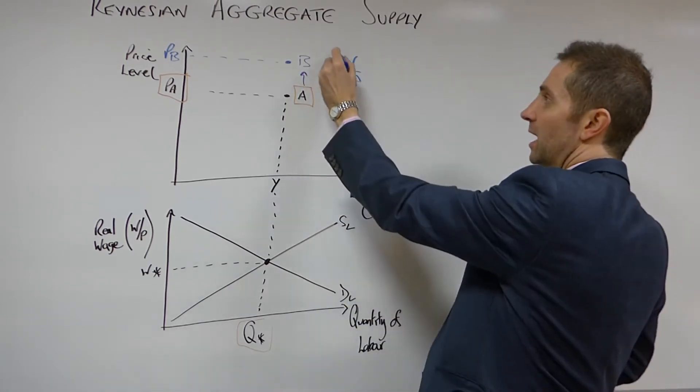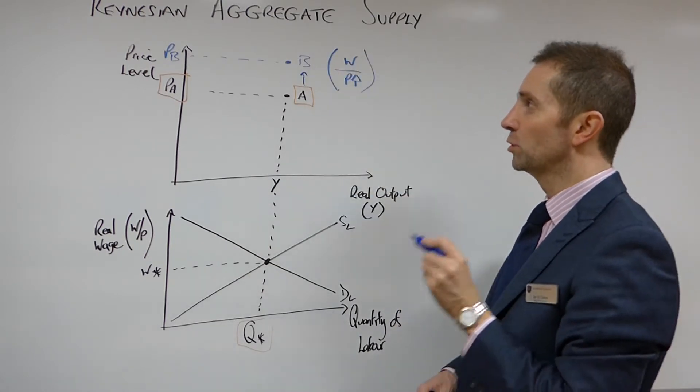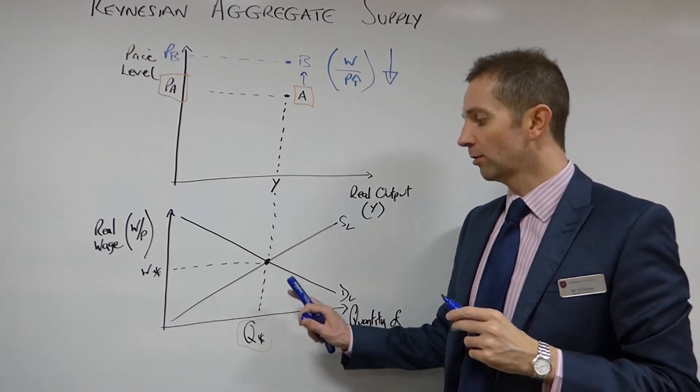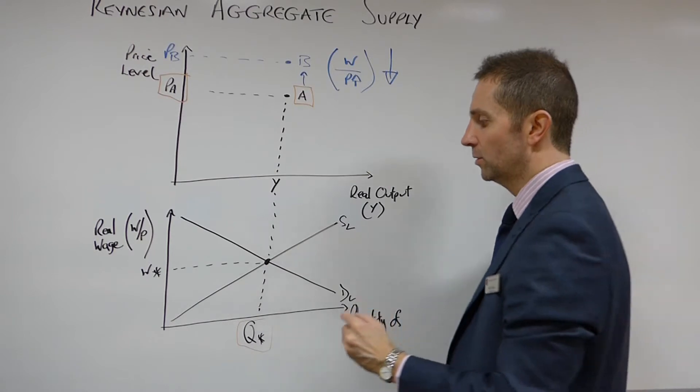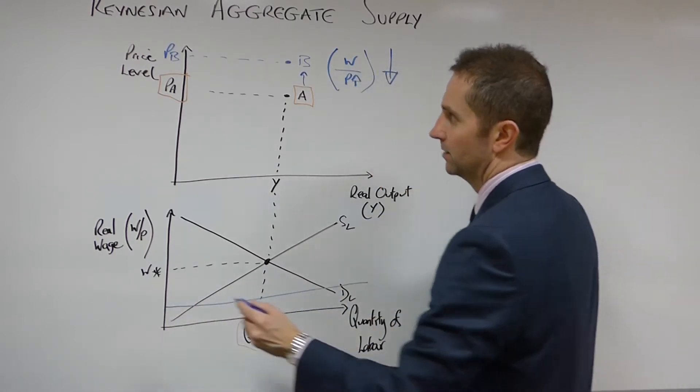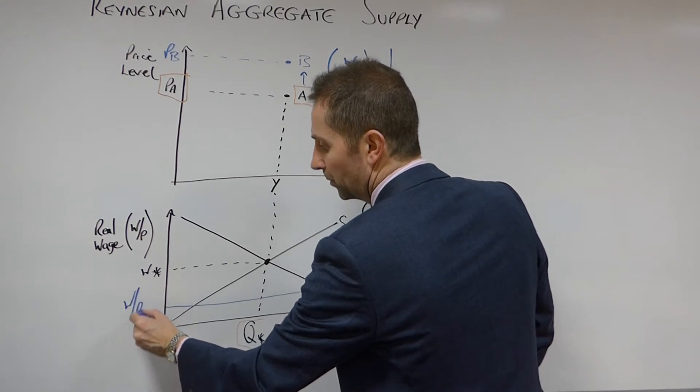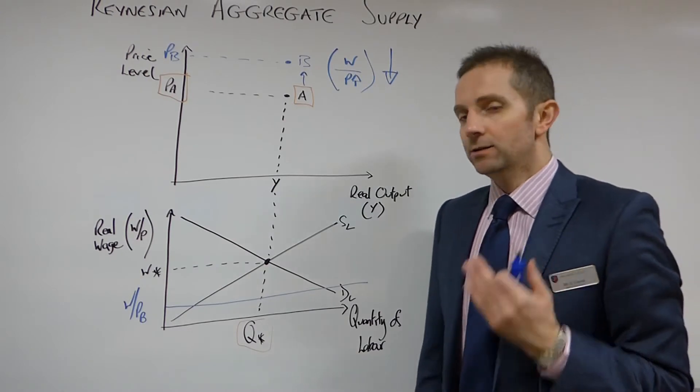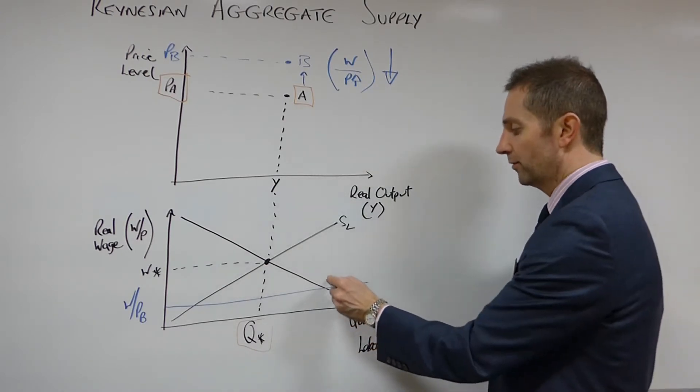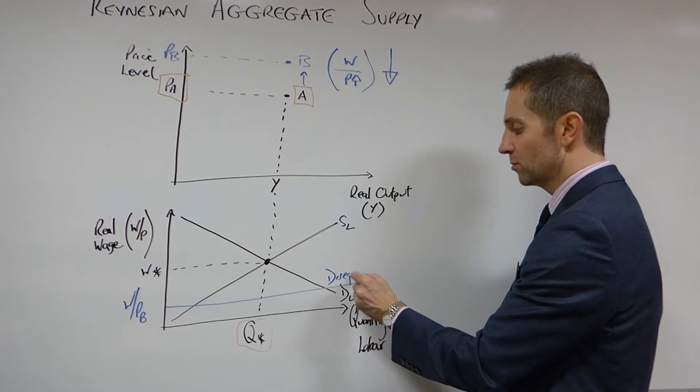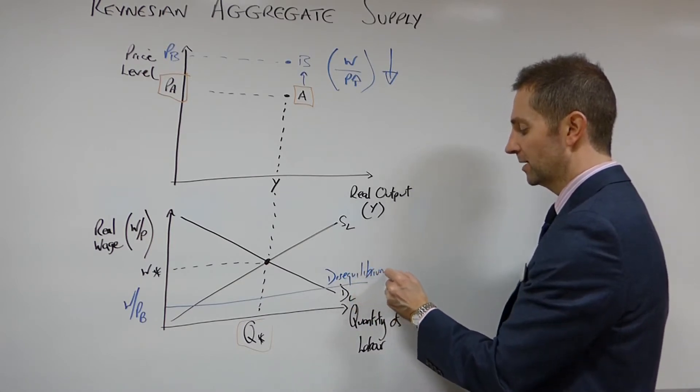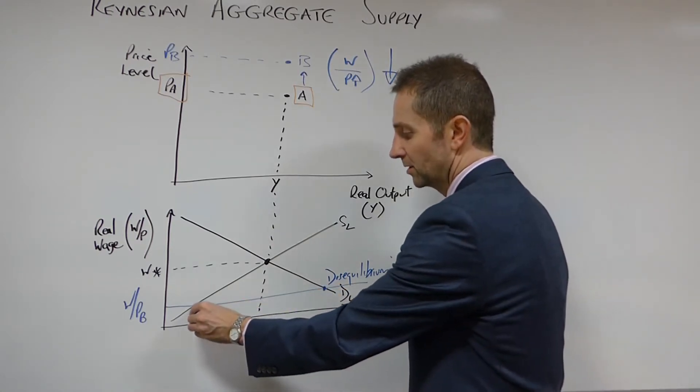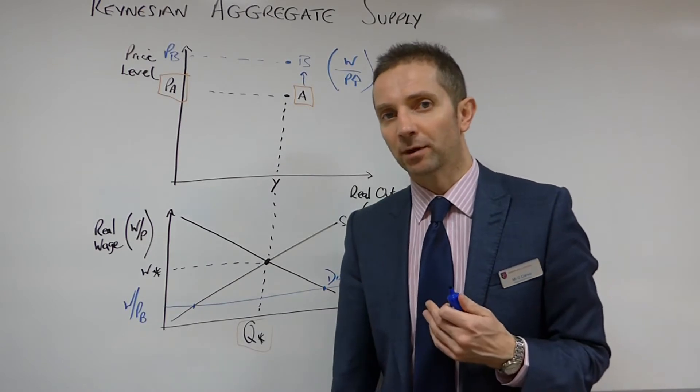So that means that in overall terms, the value of the real wage has fallen. And so we would end up on our labour market diagram somewhere down here. So we call this W over P at a price of B. Now, that is obviously a point of disequilibrium. That is not a market clearing equilibrium. And we can see here that the demand for labour is very much greater than the supply of labour.